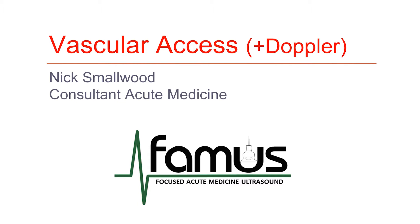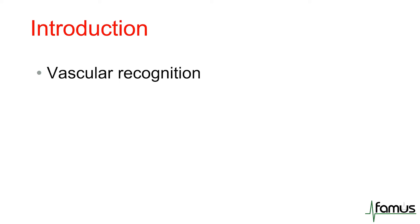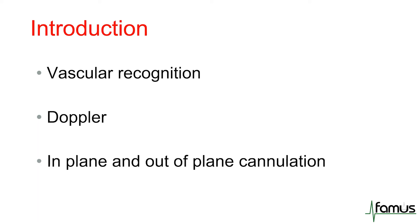10 or 15 years ago it was relatively uncommon to need to get the ultrasound machine out, but these days on most shifts there will be a difficult vascular access problem which is usually solved using an ultrasound probe. We're going to briefly talk about the recognition of veins versus arteries, touch again on the Doppler and the principles of it, and then finally some examples of in-plane and out-of-plane cannulation, the two easiest techniques to learn.